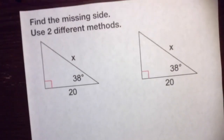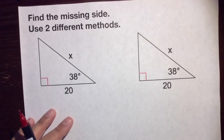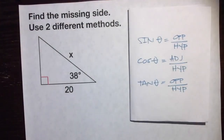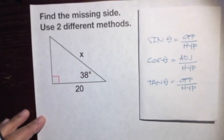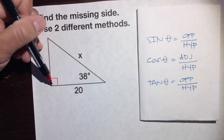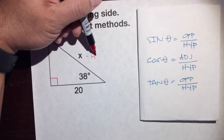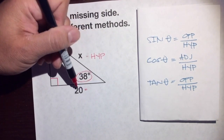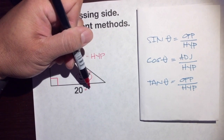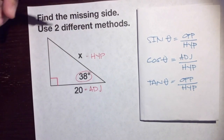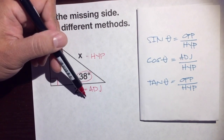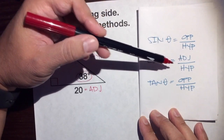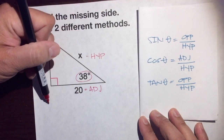Let's do one more example — find the missing side using two different methods. We have a right triangle with a 38-degree angle, a side of 20 that is next to the 38-degree angle, making it adjacent, and the hypotenuse is x. Adjacent and hypotenuse — we're going to start with cosine.